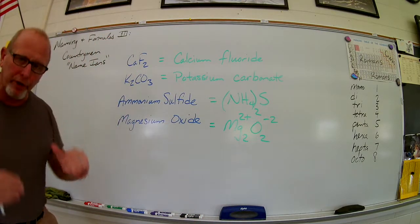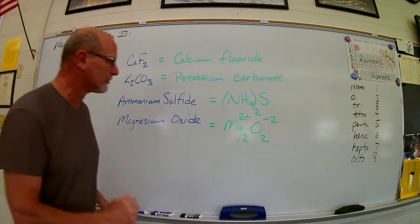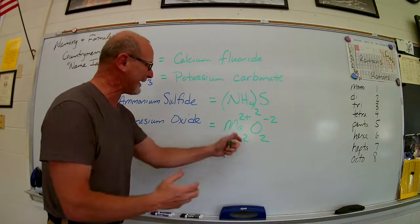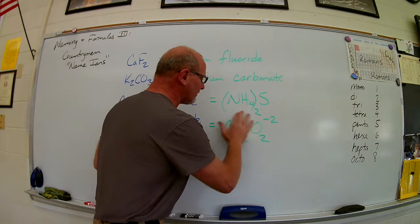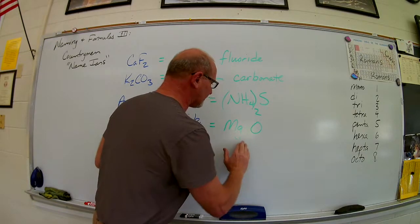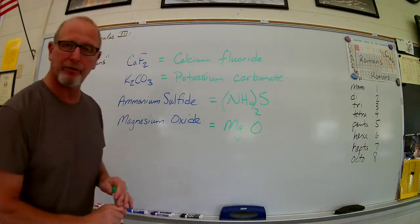I must reduce these down to the lowest possible form. I can't leave it like that. So I need a one-to-one relationship, so I just get rid of the charges. I get rid of these, and it's just going to be MGO.